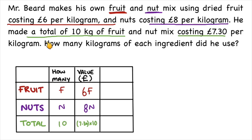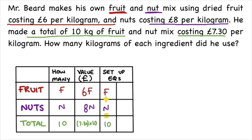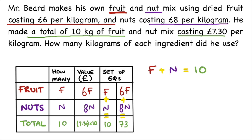Now we're going to deal with the totals. Mr. Baird bought a total of 10 kg of fruit and nut costing £7.30. The total amount of kilograms is 10 kg, and the total value is £7.30 per kg times 10 kg, which is £73. So we can set up the following system of linear equations: f plus N is equal to 10, and 6f plus 8N is equal to 73.